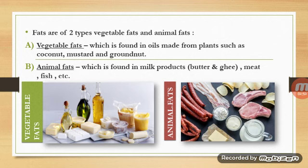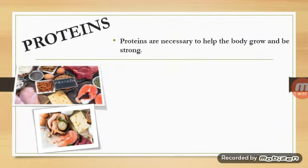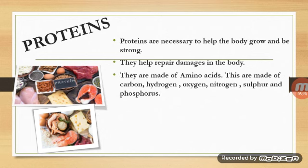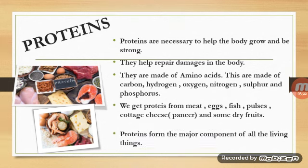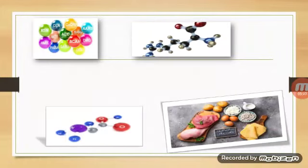The next component is proteins. Proteins are necessary to help the body grow and be strong, and they help repair damage in the body. They are made of amino acids, composed of carbon, hydrogen, oxygen, nitrogen, sulfur, and phosphorus. We get proteins from meat, eggs, fish, pulses, paneer (cottage cheese), and some dry fruits.